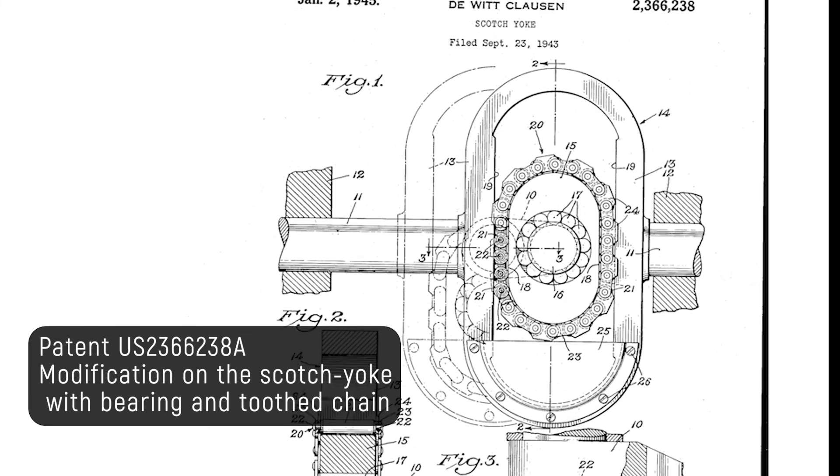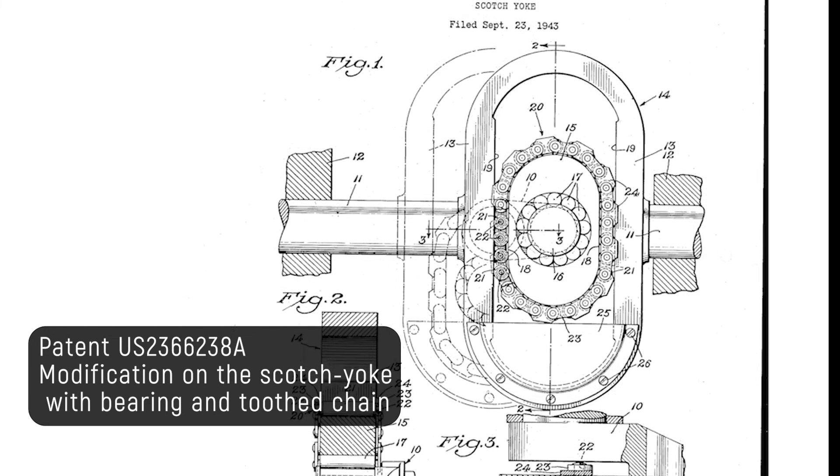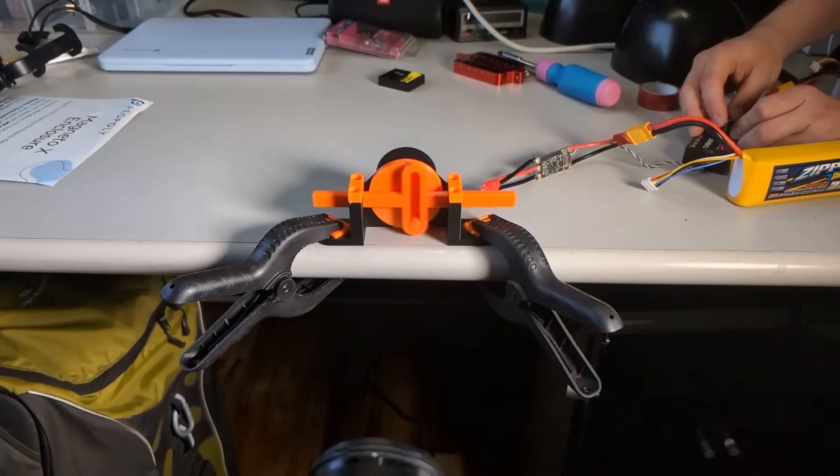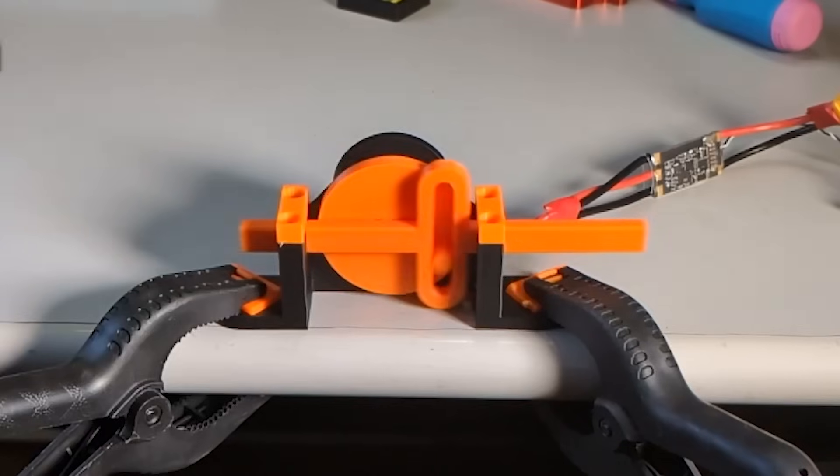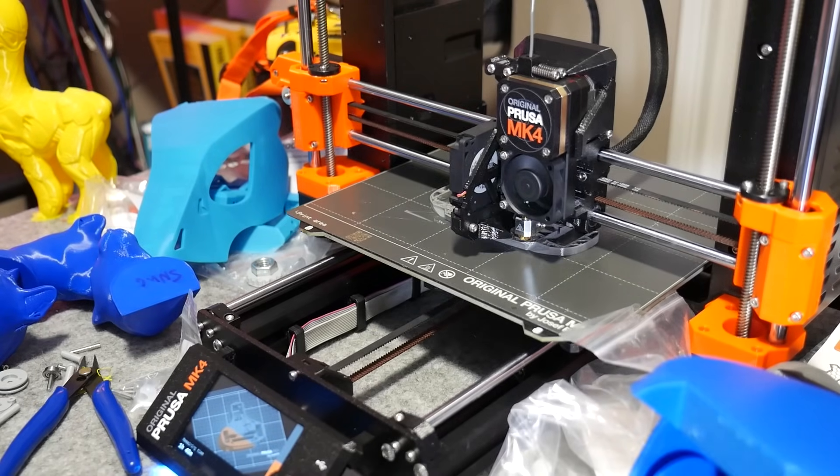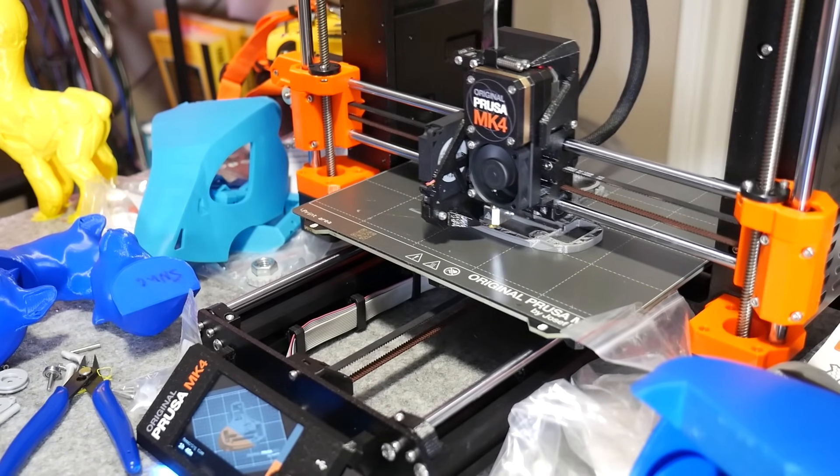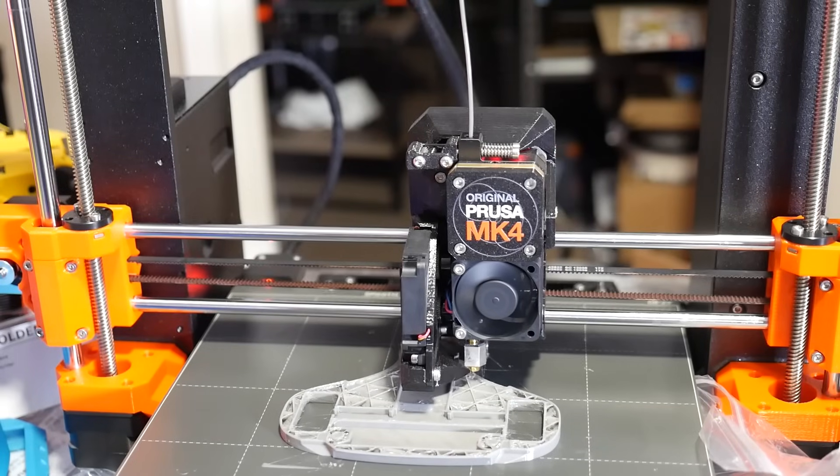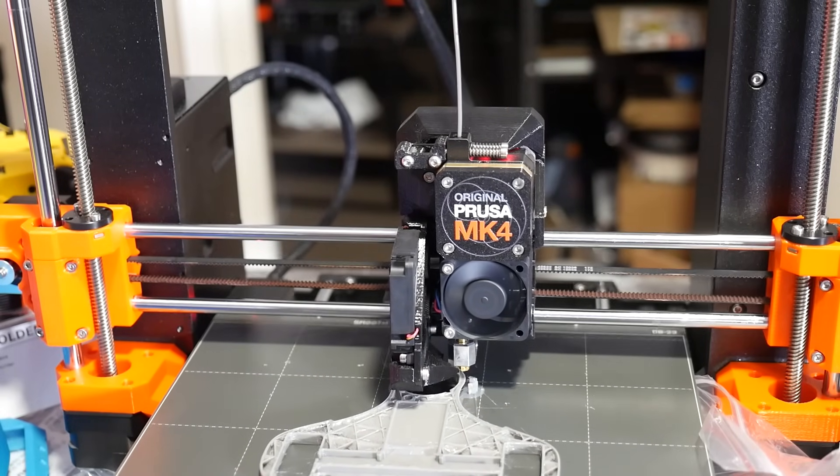Many people over the years have expanded on the scotch yoke mechanism to improve it in various ways, but I got to thinking, could the sliding friction be removed entirely? In 3D printers, the X, Y, and Z axes slide back and forth for hundreds to thousands of hours without significant wear. But how do they do it?